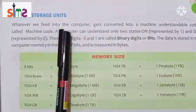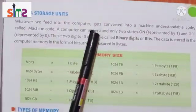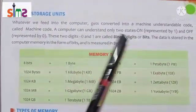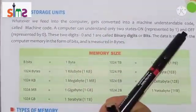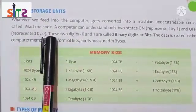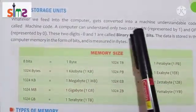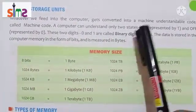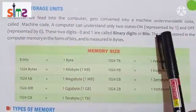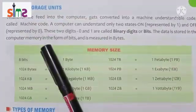Whatever we feed into the computer gets converted into a machine-understandable code called machine code. A computer can understand only two states: on, represented by one, and off, represented by zero.